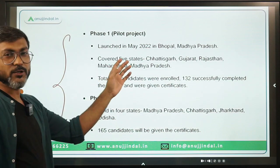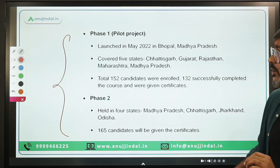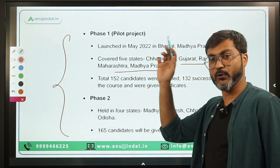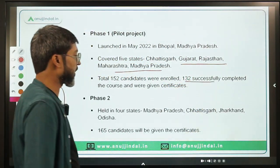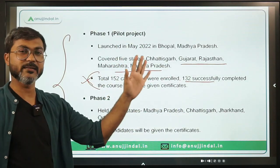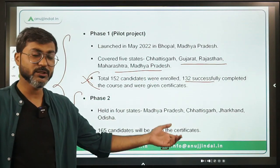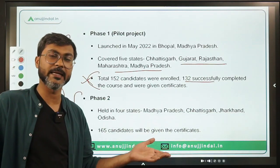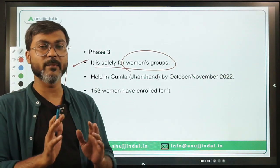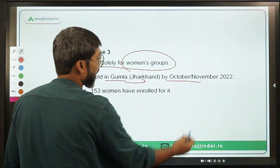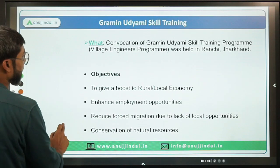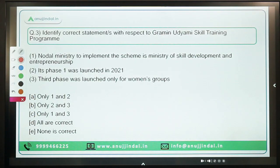In Phase 1, the pilot project was launched in May 2022 from Bhopal, Madhya Pradesh, covering five states: Chhattisgarh, Gujarat, Rajasthan, Maharashtra, and Madhya Pradesh. A total of 152 candidates enrolled, out of which 132 successfully completed the course. In Phase 2, four states were covered. Phase 3 is solely for women's groups — it was held in Gumla, Jharkhand, and will be completed by the end of October or November, with 153 women enrolled.